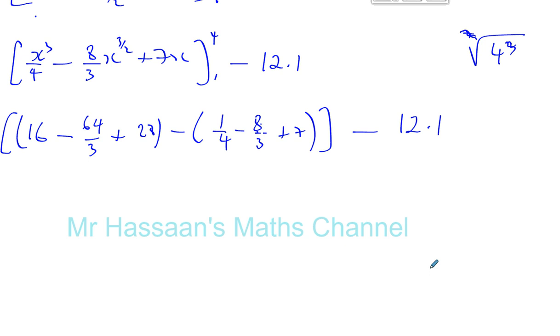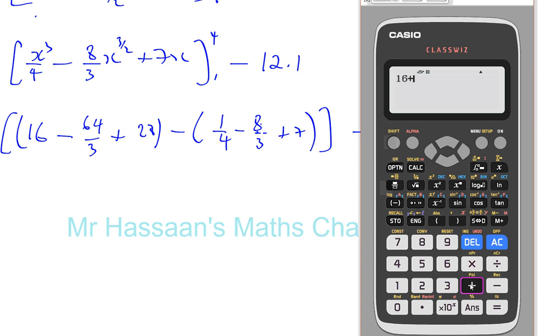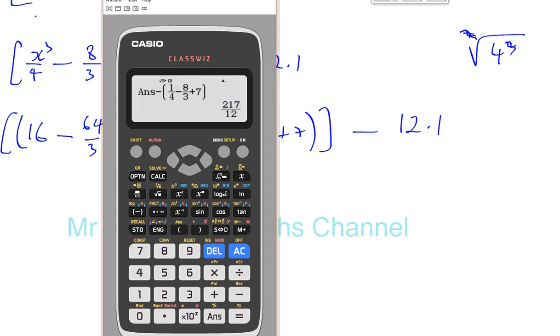So we can just stick this into our calculator and continue. So let's just do that. Here we have 16 plus 28 and minus 64 over 3. That's 68 over 3. Minus, then we're going to have a quarter, put this in a bracket, a quarter, minus 8 over 3 plus 7. Close bracket. That will be the area under the whole curve, and we've got to take away from that 12.1. Take away 12.1.